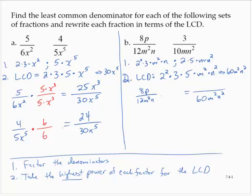12 times 5 is 60, the m squared is already fine, and I need a factor of n — so multiply by 5n. That gives me 8 times 5, which is 40, and then in alphabetical order, np — so 40np over 60m squared n squared.